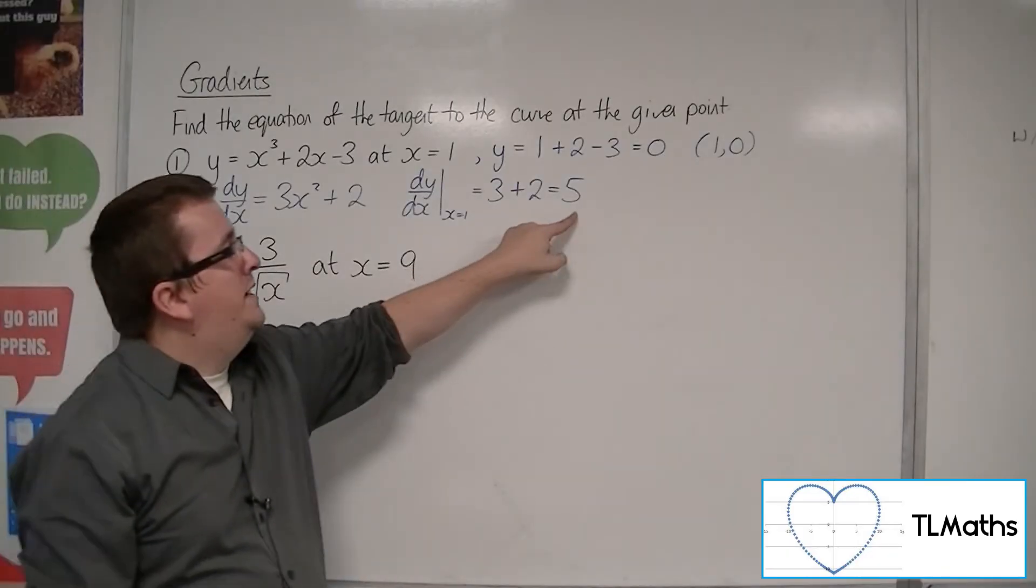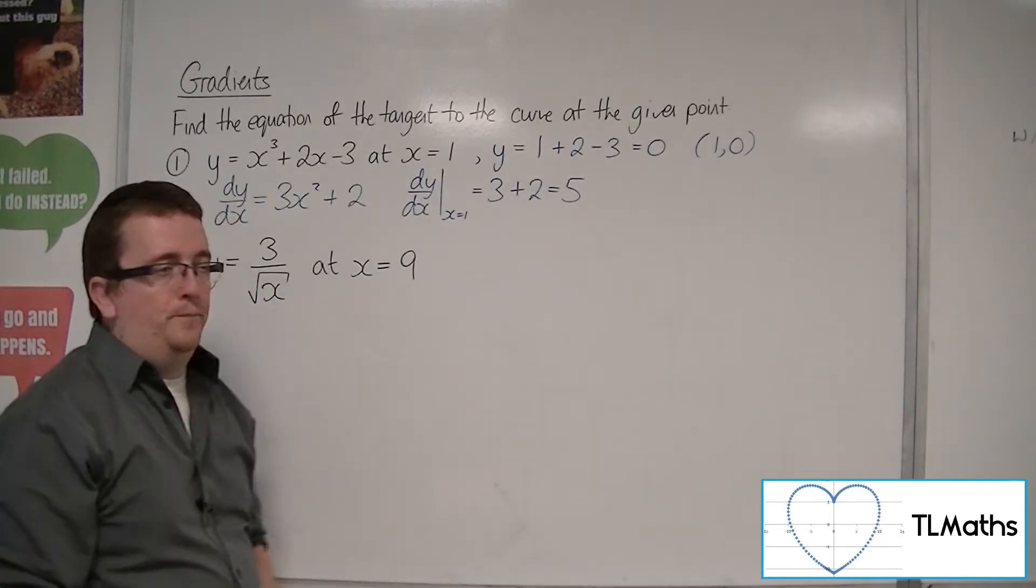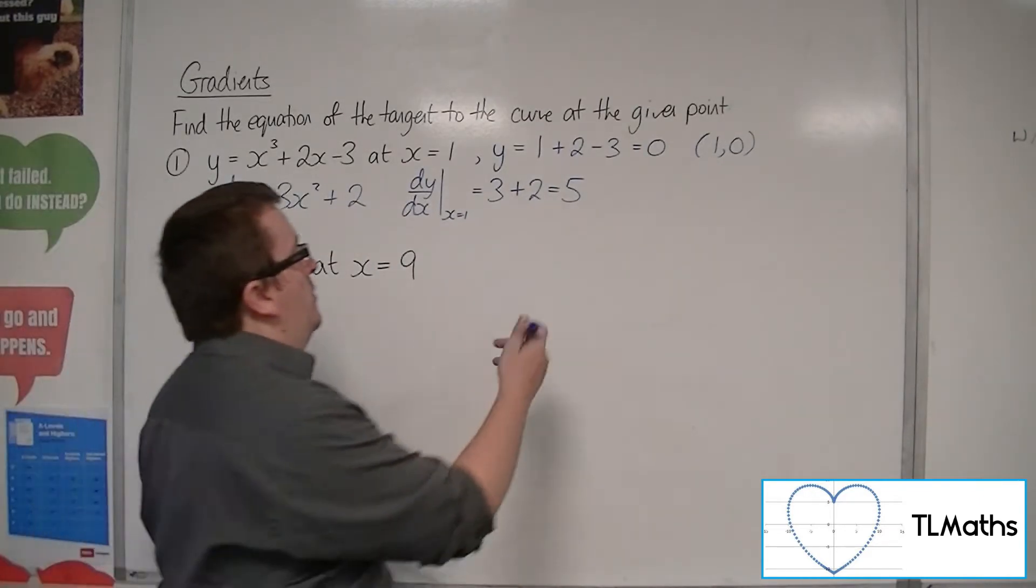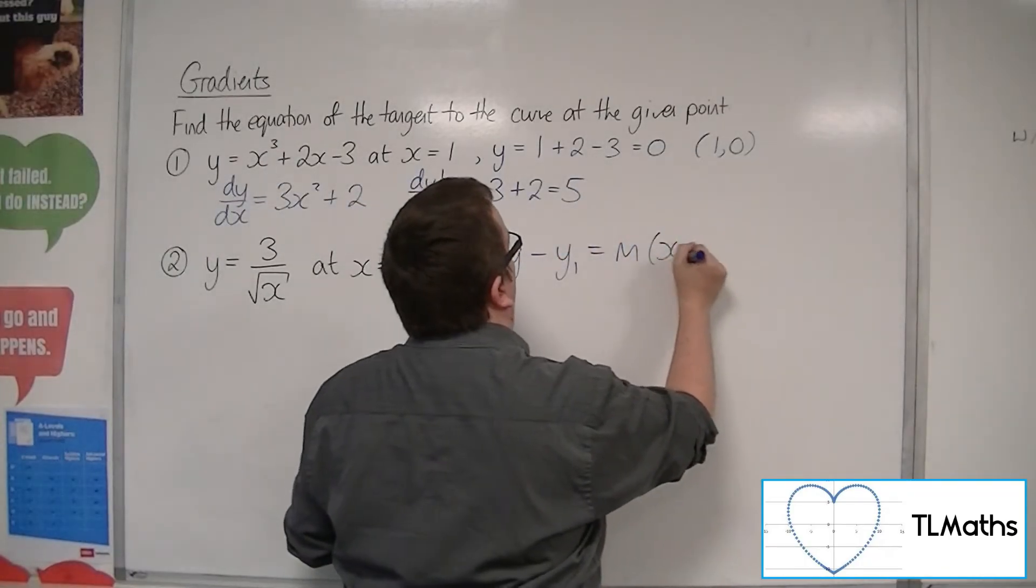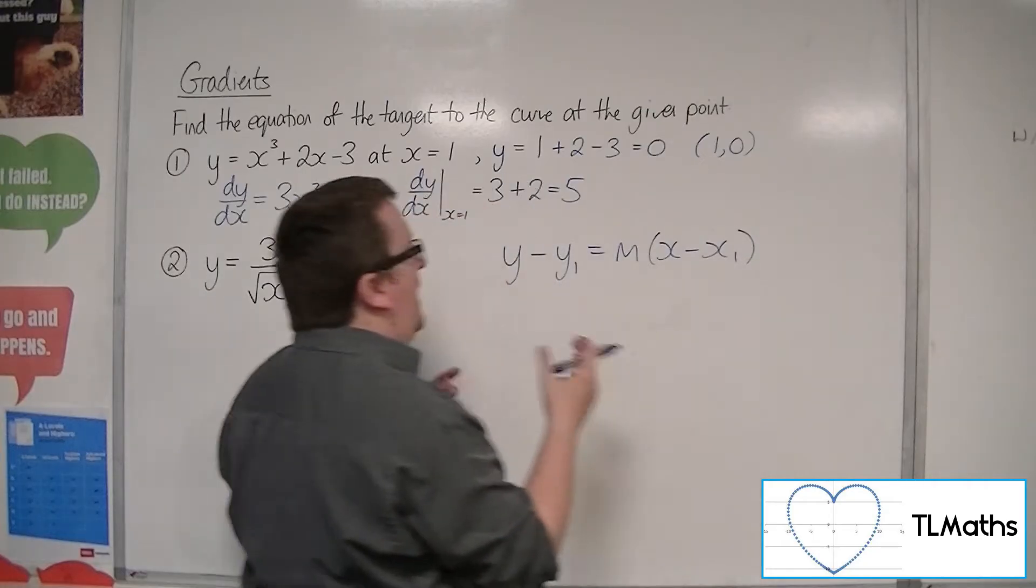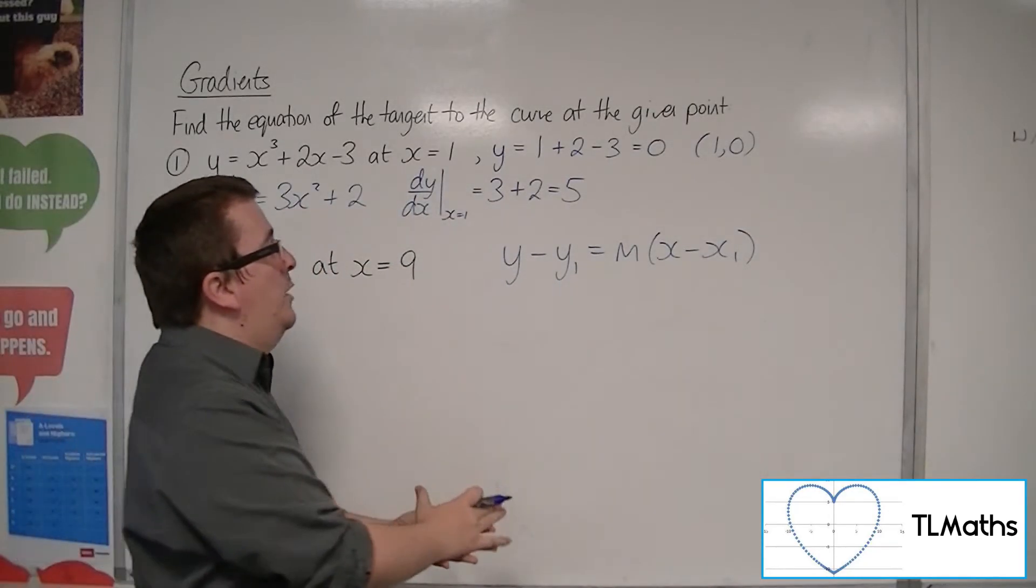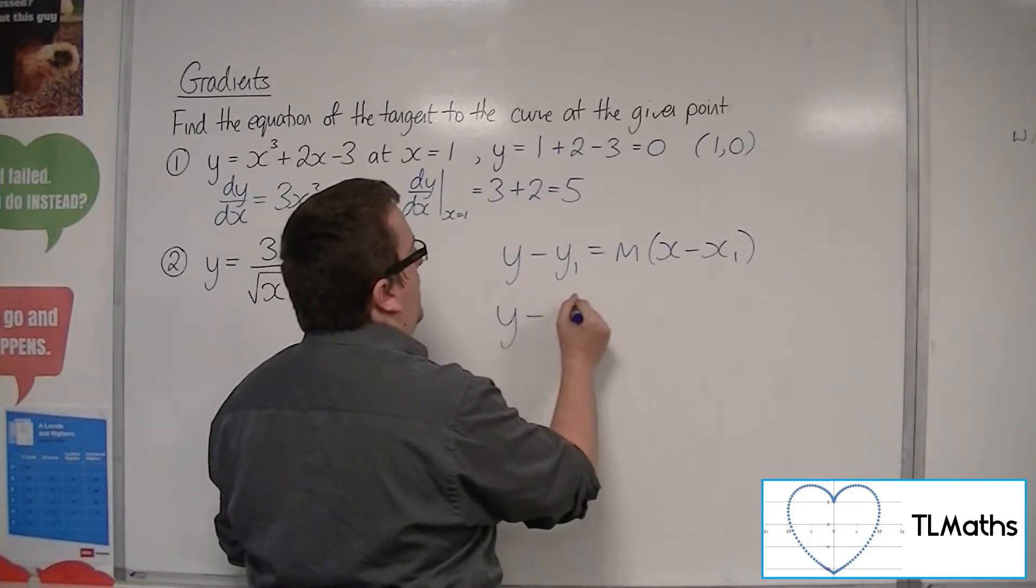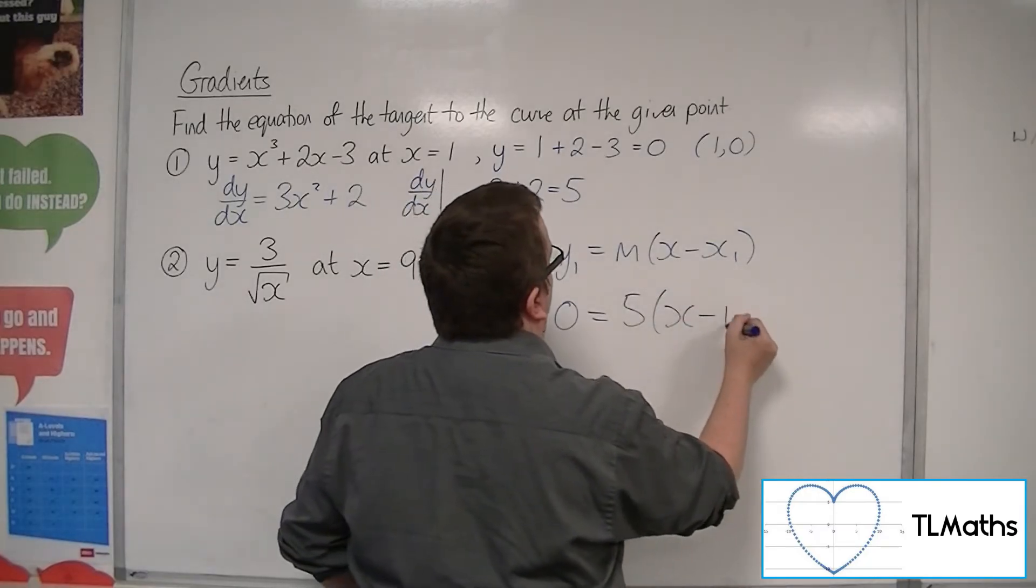So that is the gradient of the tangent and that is the point that it goes through. So we can now use y minus y1 equals mx minus x1. Because we have the x1, y1, we know a point that the line goes through and we know the gradient of the line. So we've got y minus 0 is equal to 5x minus 1.